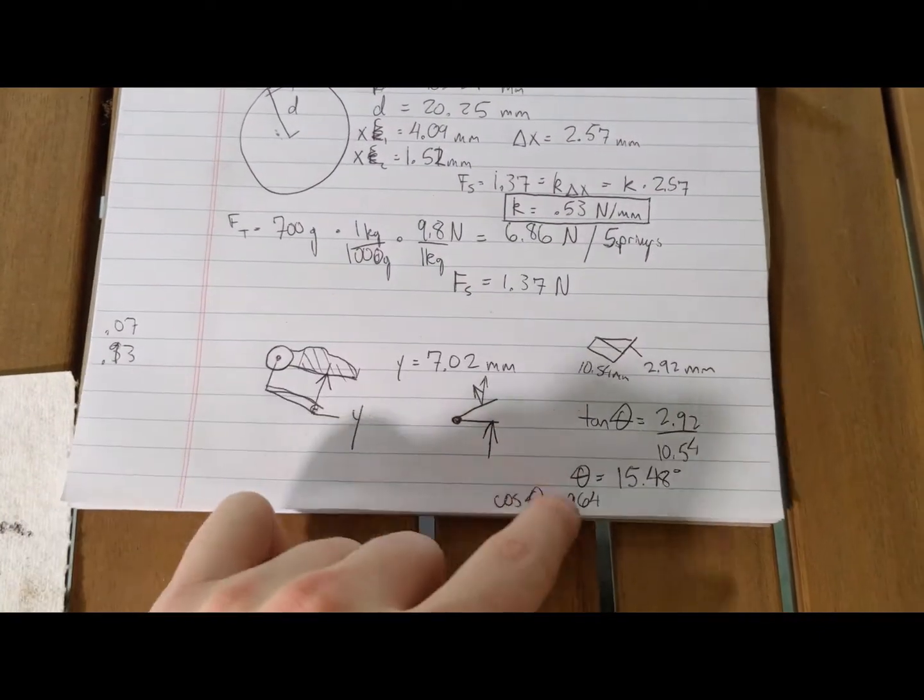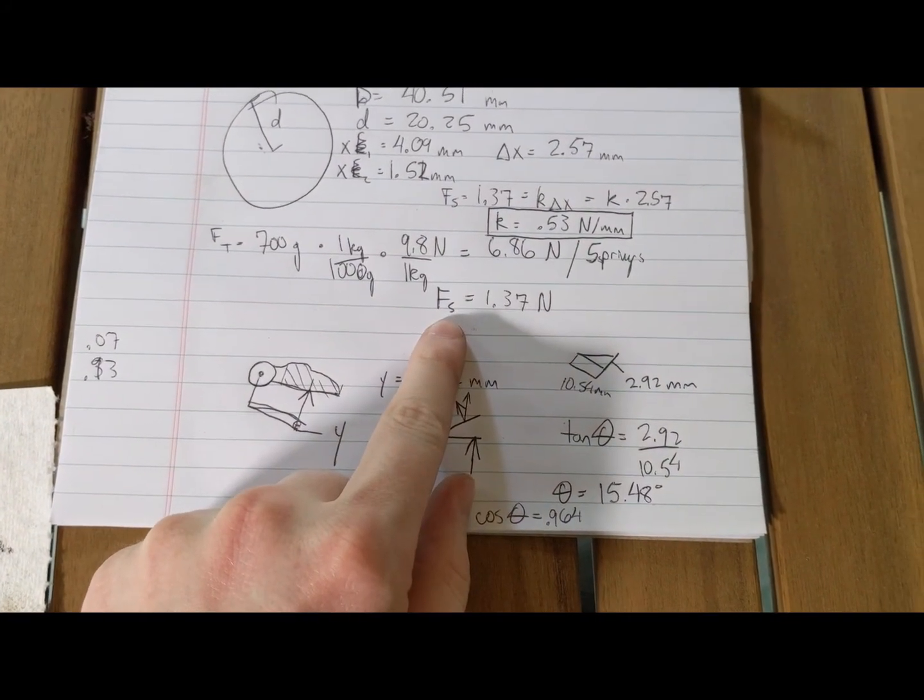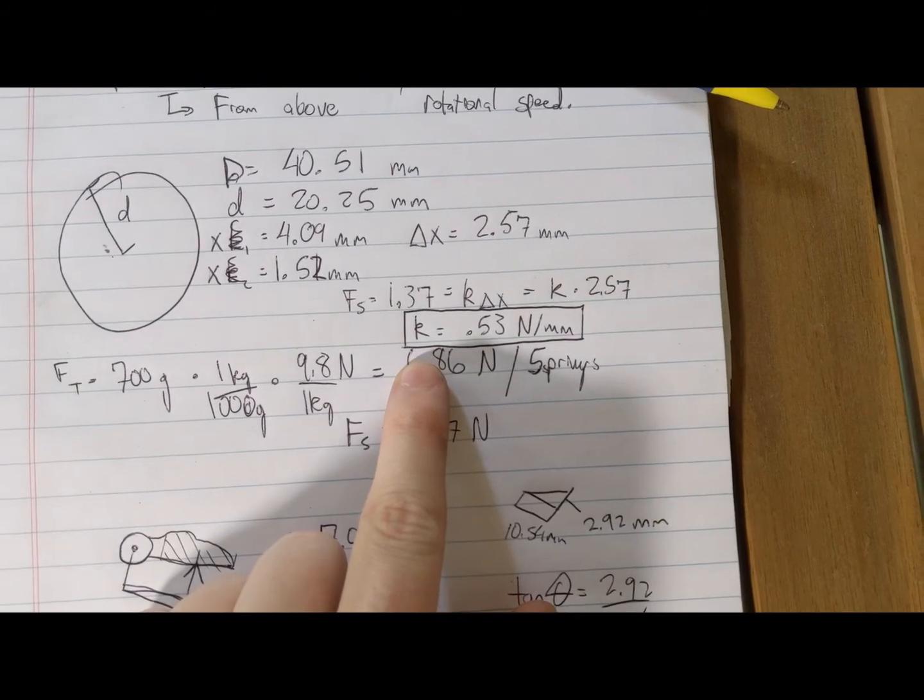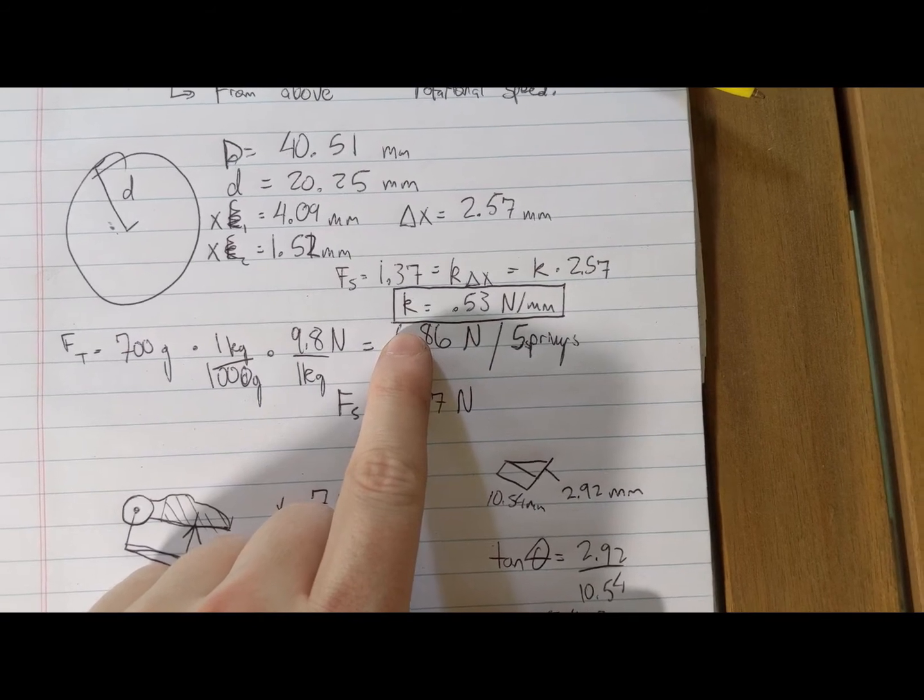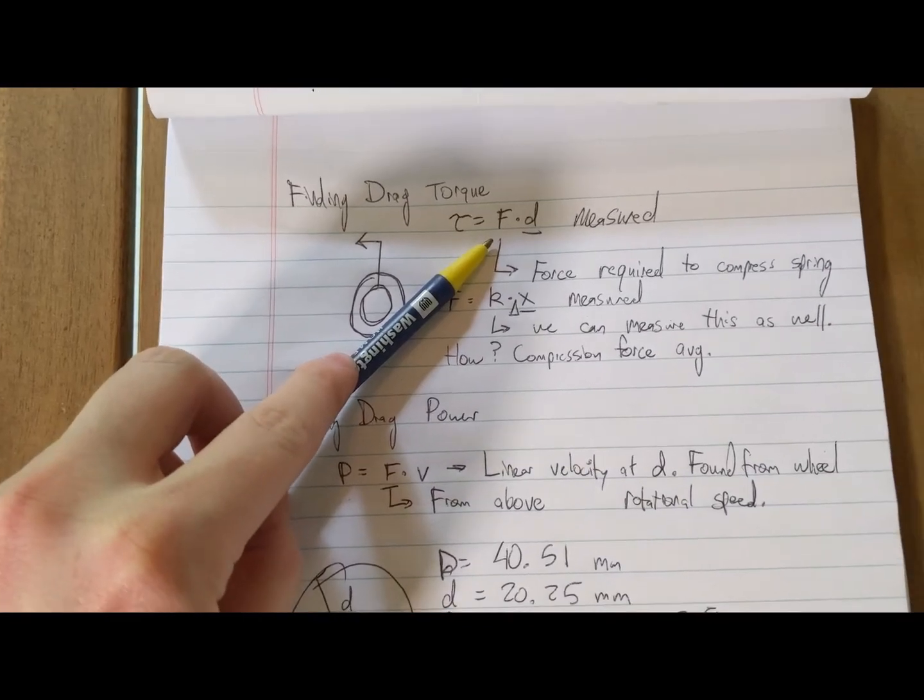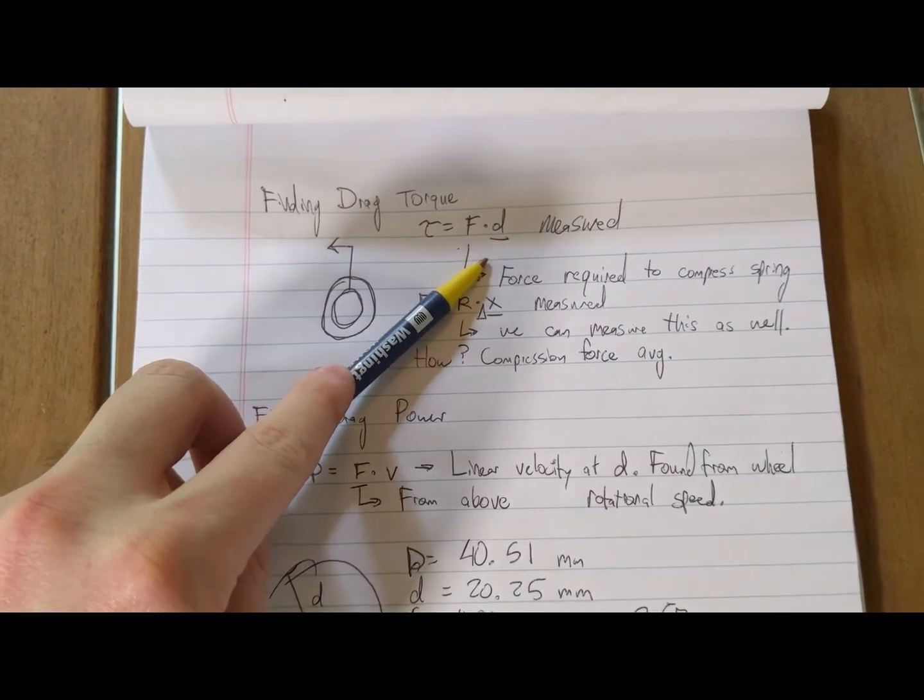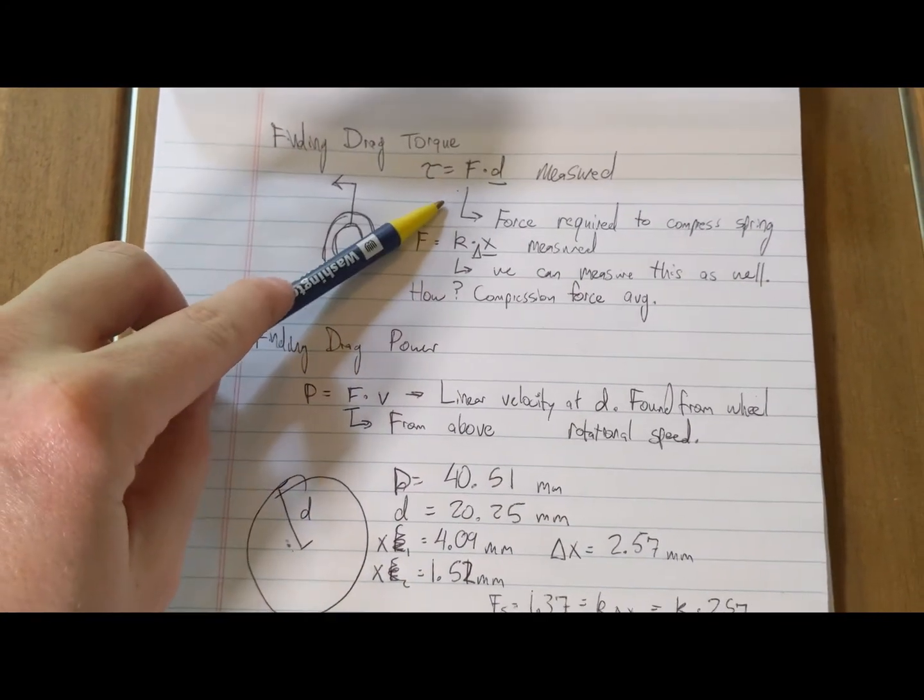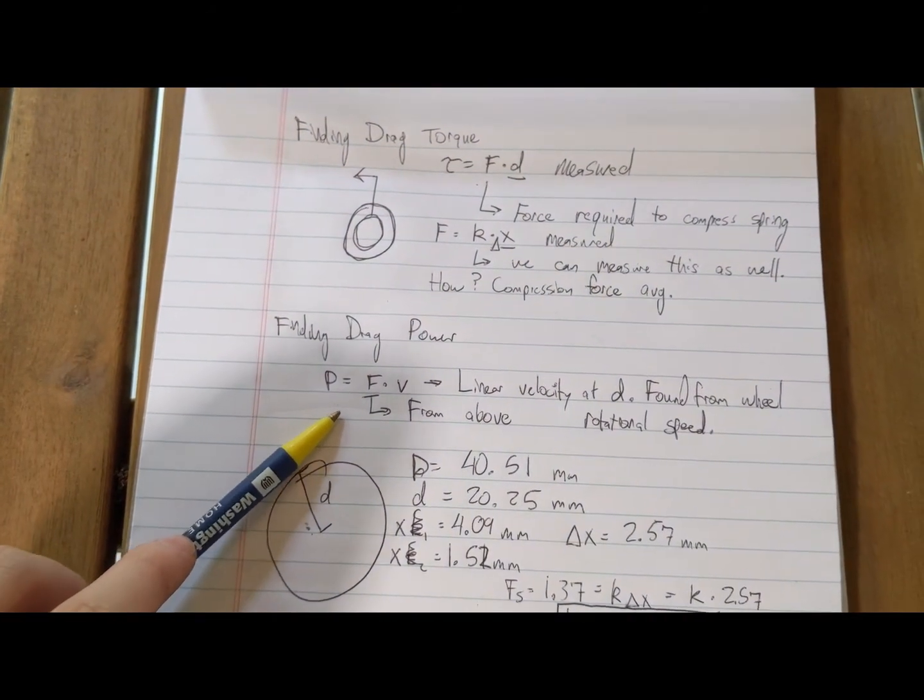That's my first assumption. That means all this stuff with angles doesn't really matter because we're just going to be using the spring force and multiplying it by that distance. One other thing I found: if you look at the spring force equation, we got a K value of 0.53 newtons per millimeter, which is actually a lot stronger than I thought it would be. Now we're going to go through our exercise of finding the drag torque.